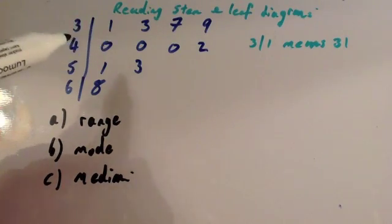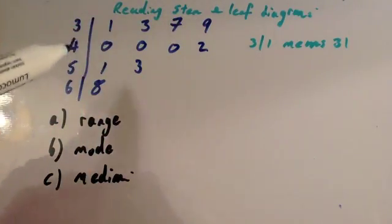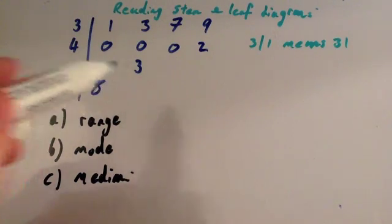The key says 3 slash 1 means 31. So this means that that number's 31, the next number's 33, 37, 39, 40, 40, 40, 42, 51, 53, and 68.